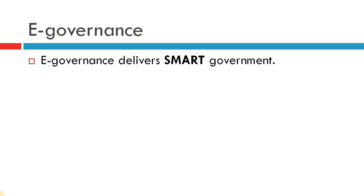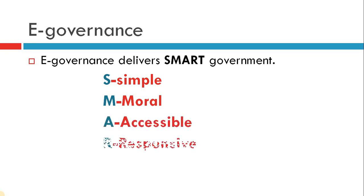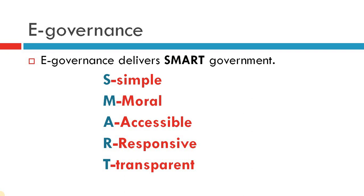E-governance delivers smart government. This statement is very important — you must remember it. Now, the word SMART, what does it stand for? SMART stands for Simple, Moral, Acceptable, Responsive and Transparent. When we are talking about e-governance, e-governance incorporates all these different properties.